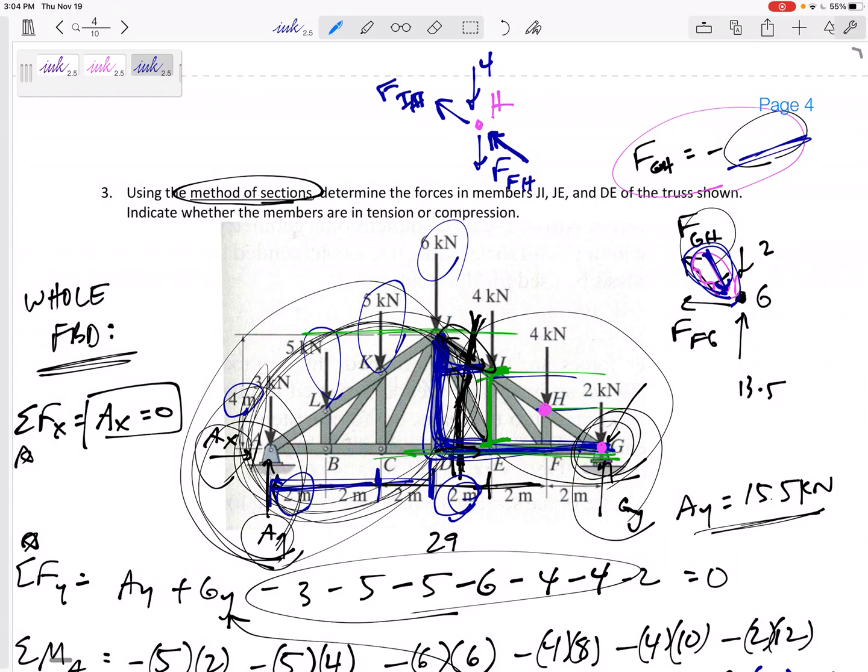So method of joints, you look at joint G, then hop to joint H, then hop to joint F, then hop to joint I, then hop to whatever joints you need to do to answer the question that the problem statement is asking for.